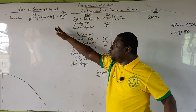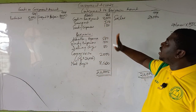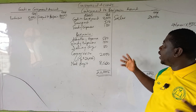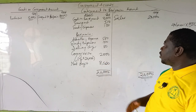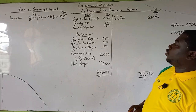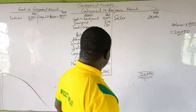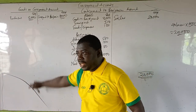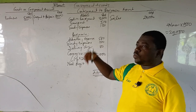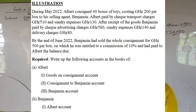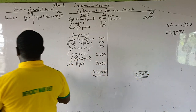So the consignment to Benjamin account is straightforward: credit sales, debit all expenses, and the difference is profit if it appears on the debit side, or loss if it appears on the credit side. Now we prepare the last account in the books of Albert, which is Benjamin's account — the consignee account.